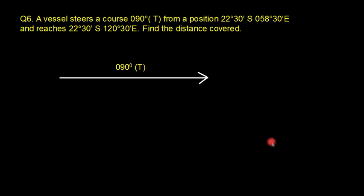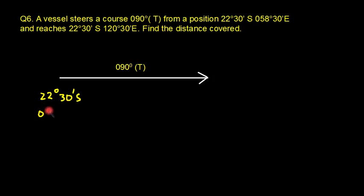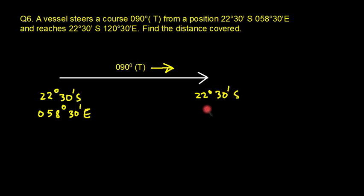In this part I'm going to discuss a few more questions. A vessel steers a course of 090° True from a position 22°30'S, 058°30'E and reaches 22°30'S, 120°30'E. The course is 090° and the starting position is 22°30'S, 058°30'E, arriving at 22°30'S, 120°30'E.